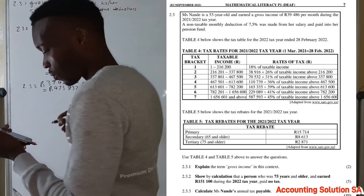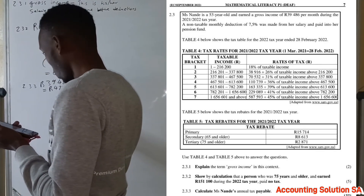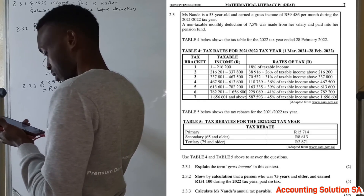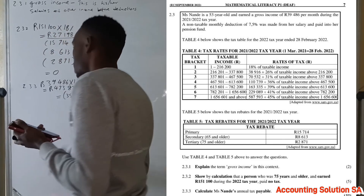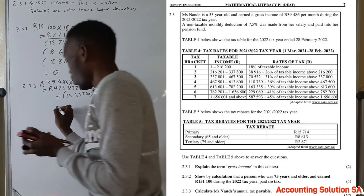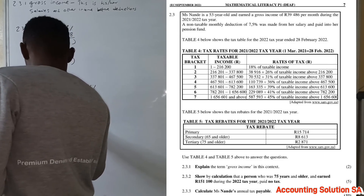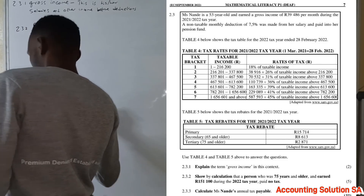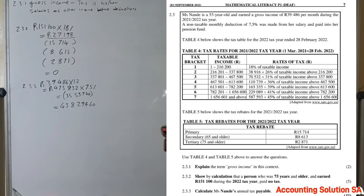Calculating 7.5% of R473,832 gives us R35,537.40, which we subtract from the annual income. Taking R473,832 minus R35,537.40 gives us R438,294.60. This is her annual income after the pension fund deduction.